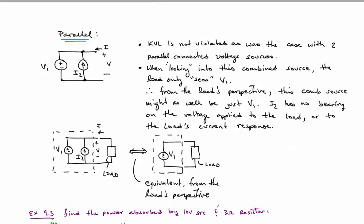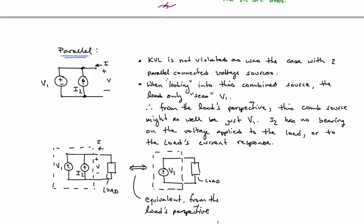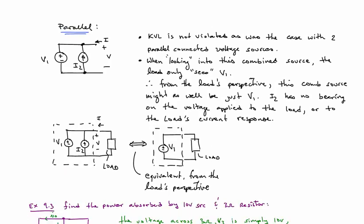The same thing or a similar thing occurs for sources in parallel. When you have sources in parallel, you are not violating, or a current and a voltage source in parallel, you're not violating KVL. However, the voltage across those two sources is controlled by V1.